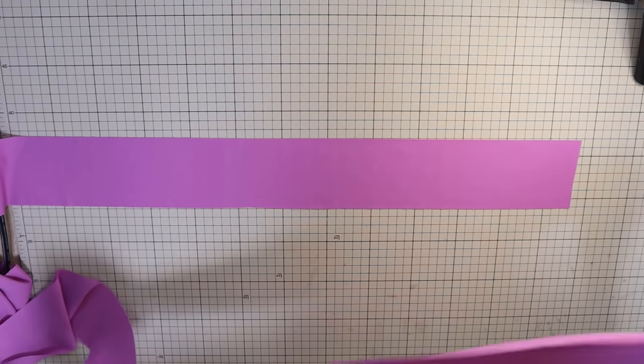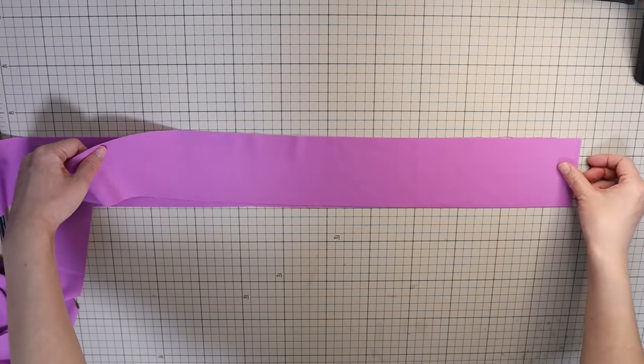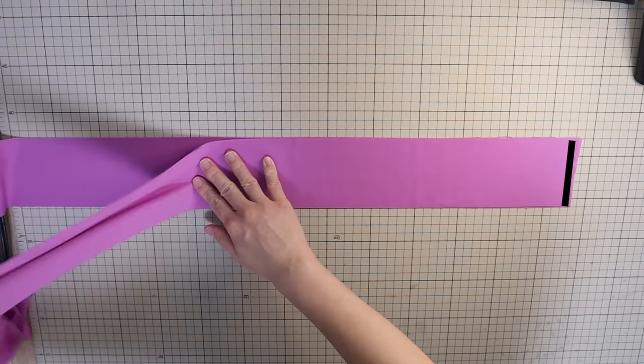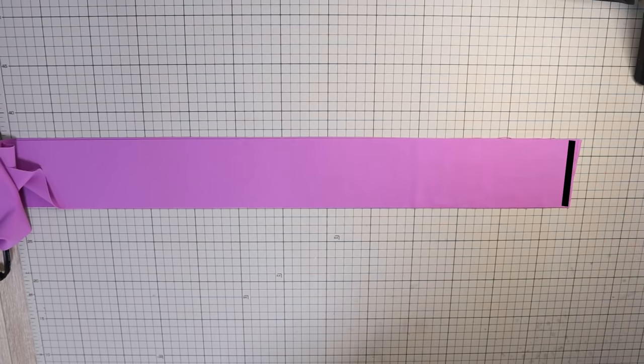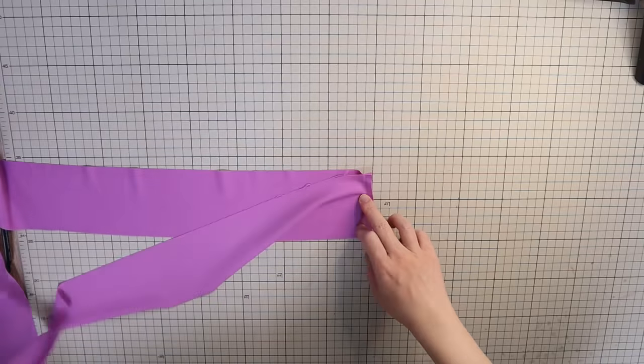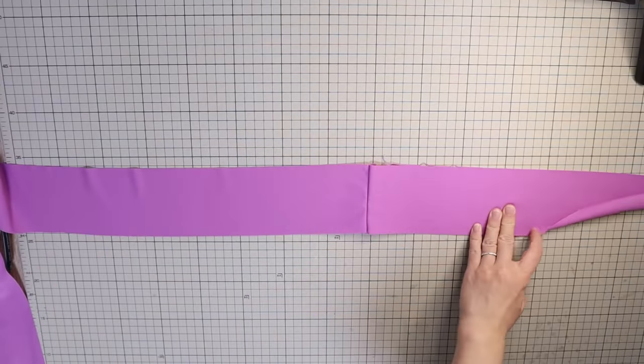Next, take the two long strips and place them right sides together. And do a straight stitch at one of the ends with the 1 centimeter or 3 eighths of an inch seam allowance. Now you have one very long strip.